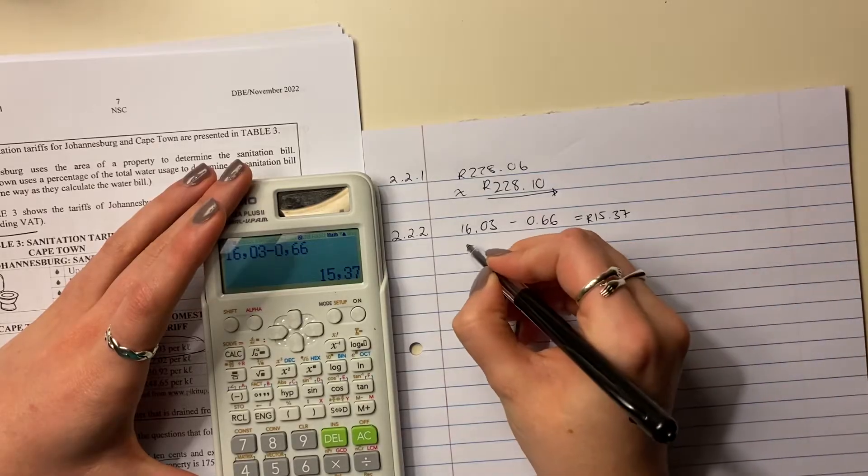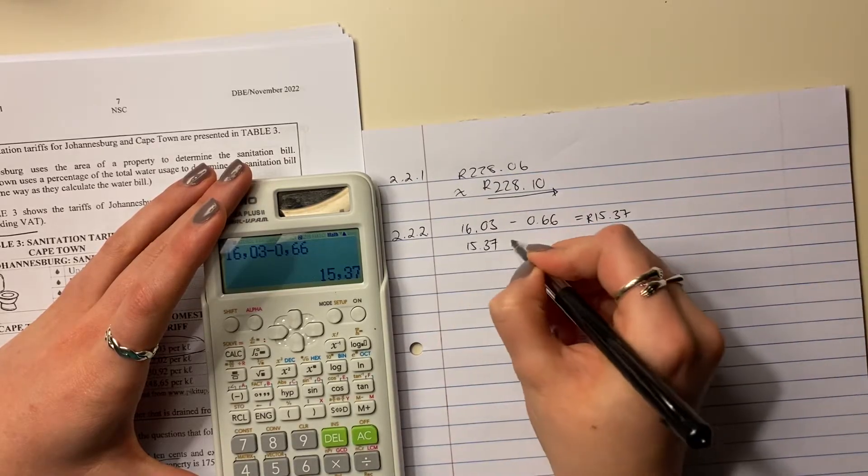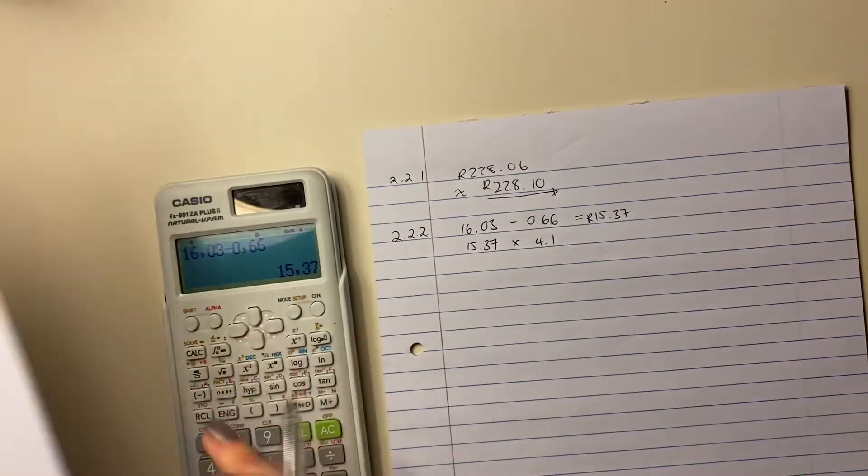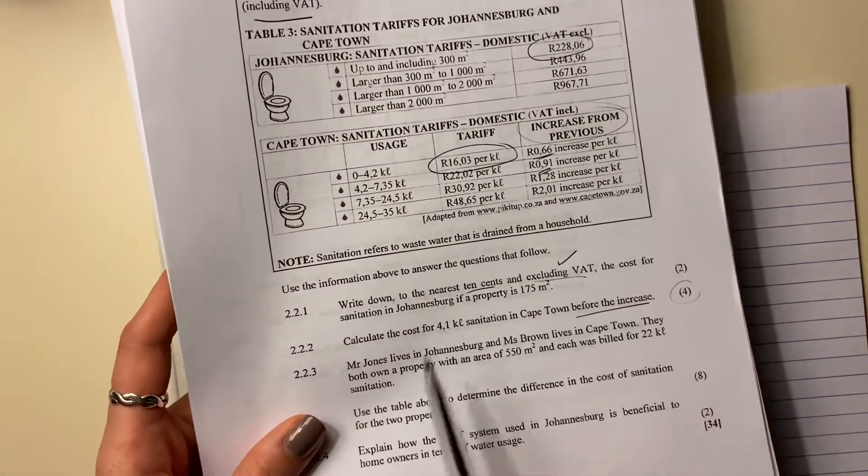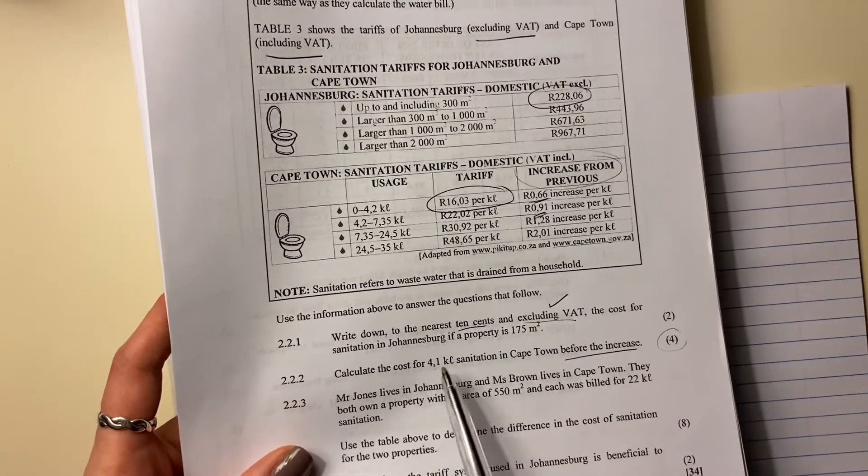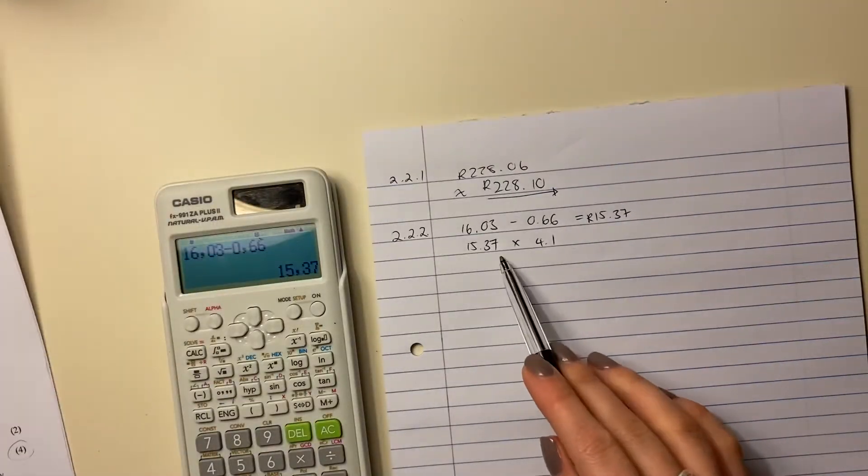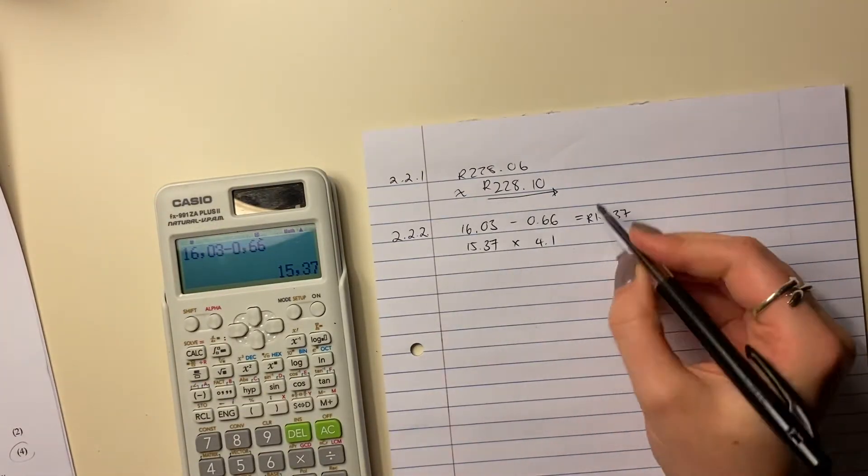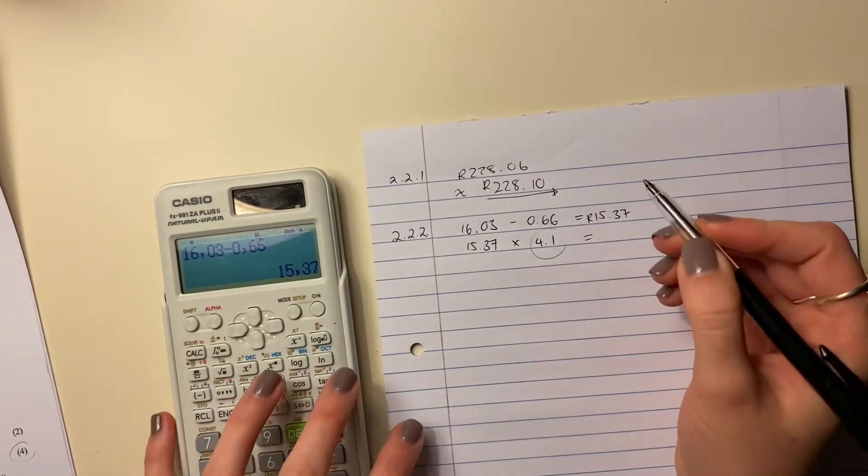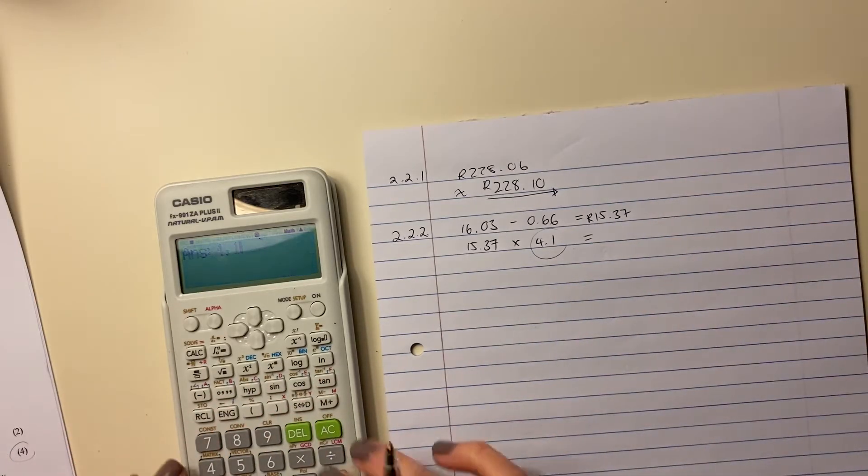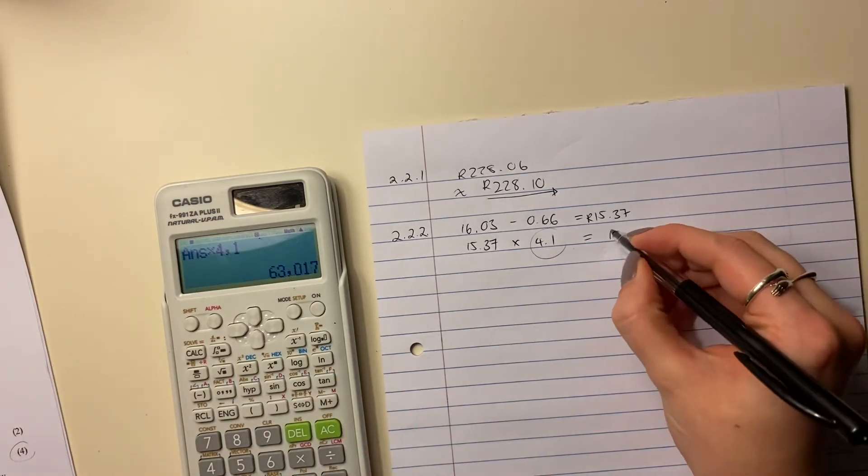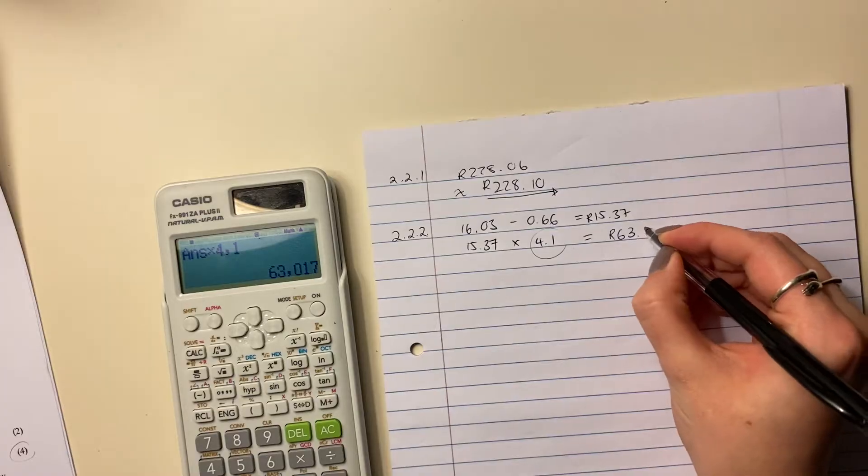Now what we're going to do is take that 15.37 rand and times it by 4.1. Why are we times it by 4.1? Well, it's because this house used 4.1 kiloliters. So we know that this is the amount per kiloliter. We times it by the number of kiloliters. And then we are away.